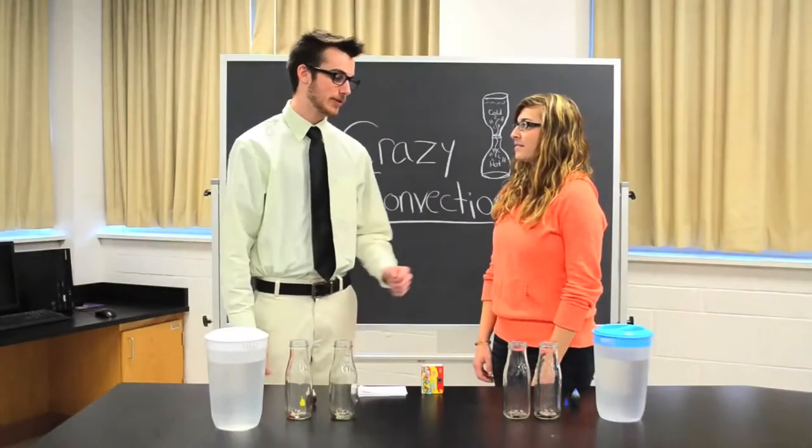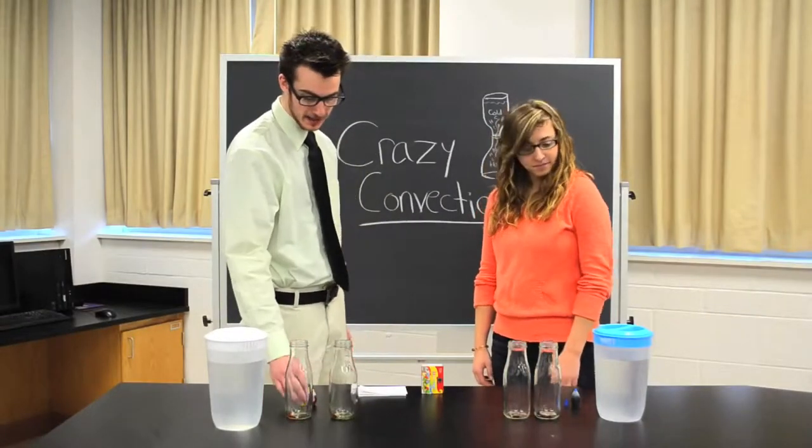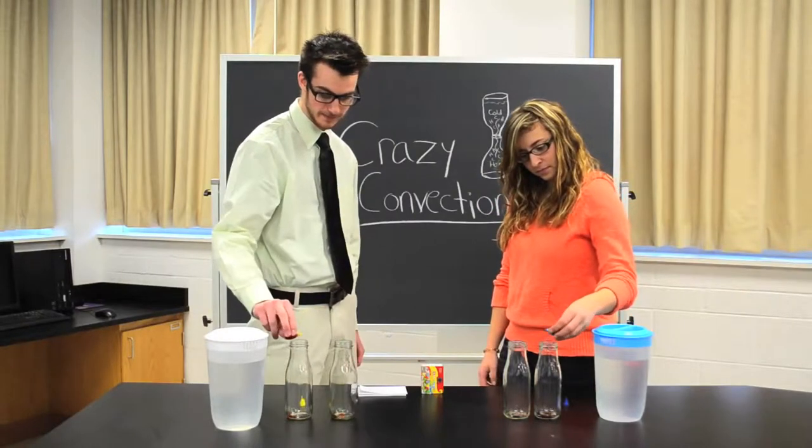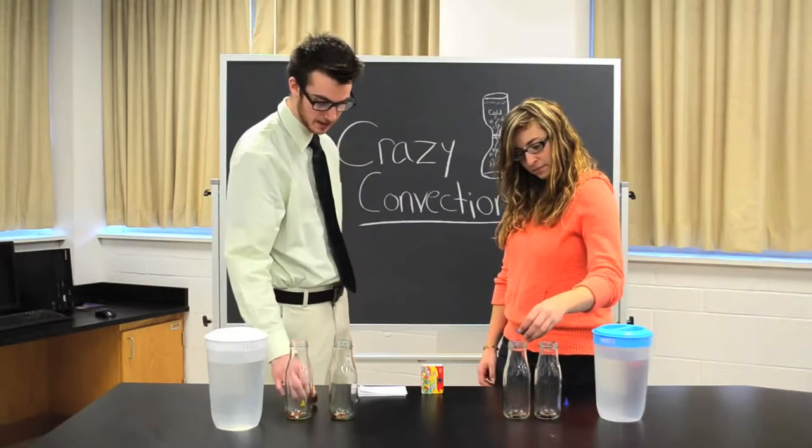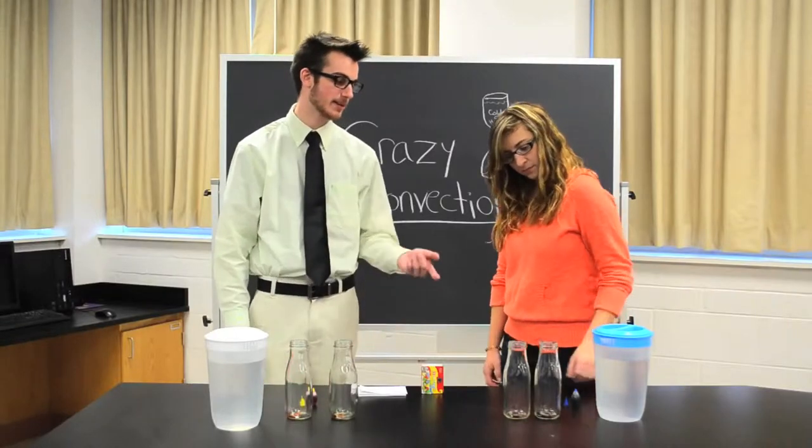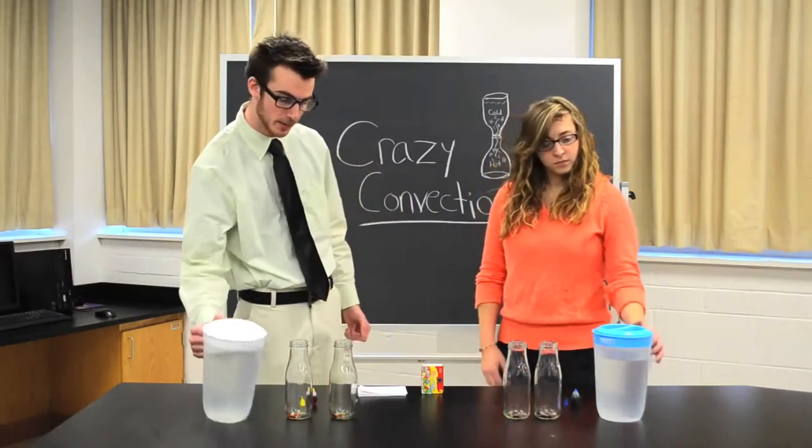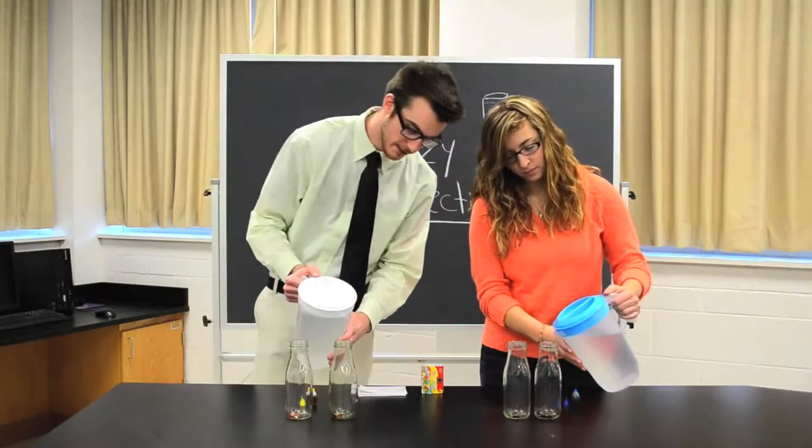Okay, let's first put a few drops of blue dye in two bottles and a few drops of yellow dye in two bottles. Now, let's fill the bottles with the blue dye with cold water and the bottles with the yellow dye with warm water. And let's fill it to the brim.